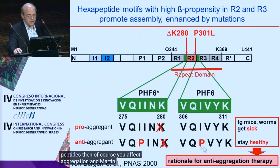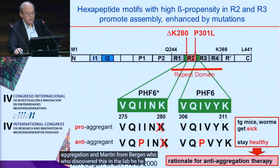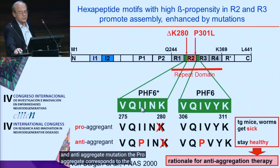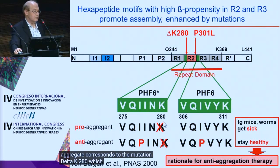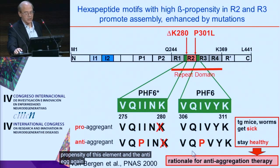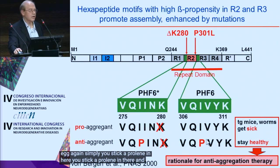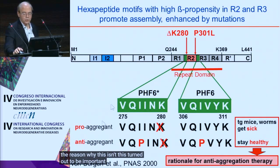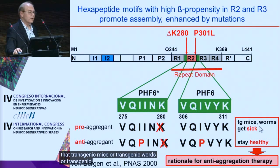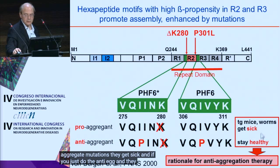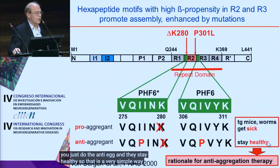Martin von Bergen, who discovered this in the lab, coined the terms pro-aggregant mutations and anti-aggregant mutations. The pro-aggregant corresponds to the mutation delta K280, which is observed in tauopathies and enhances the beta propensity of this element. The anti-aggregant simply involves inserting prolines at these positions, resulting in no more aggregation. Transgenic mice, worms, or other transgenic animals with pro-aggregant mutations get sick, while those with anti-aggregant mutations stay healthy.